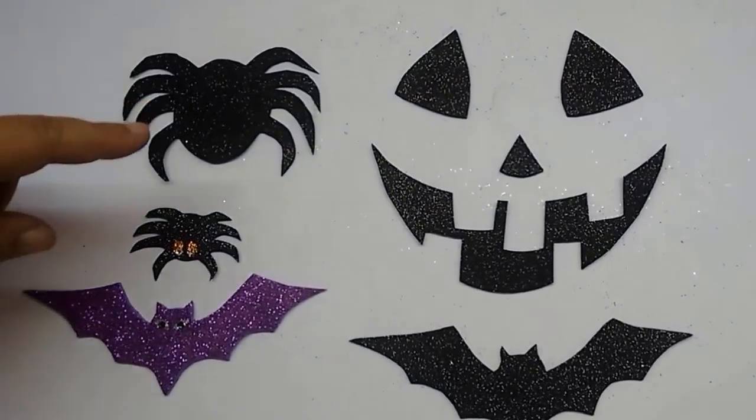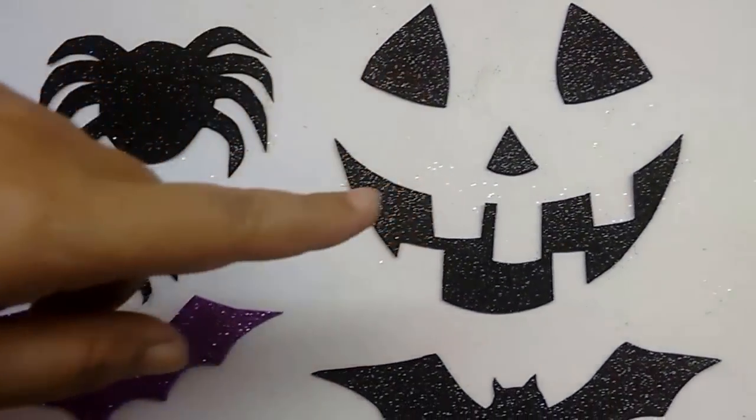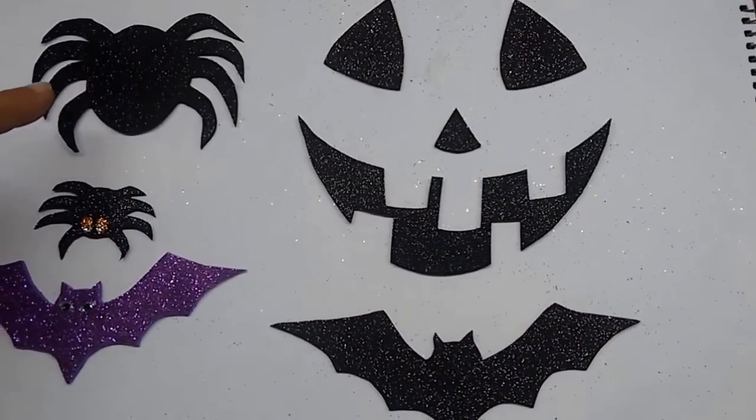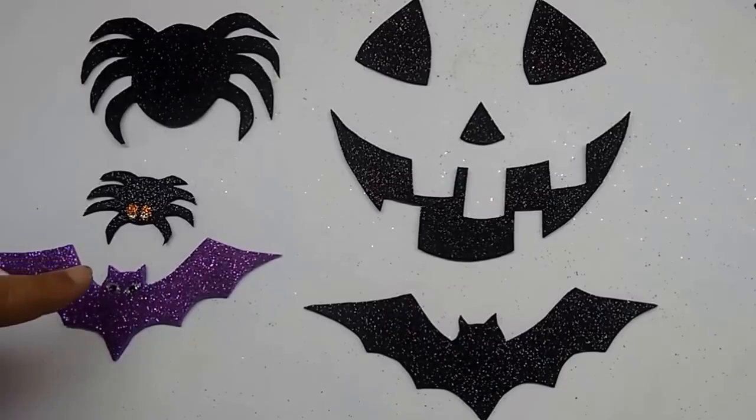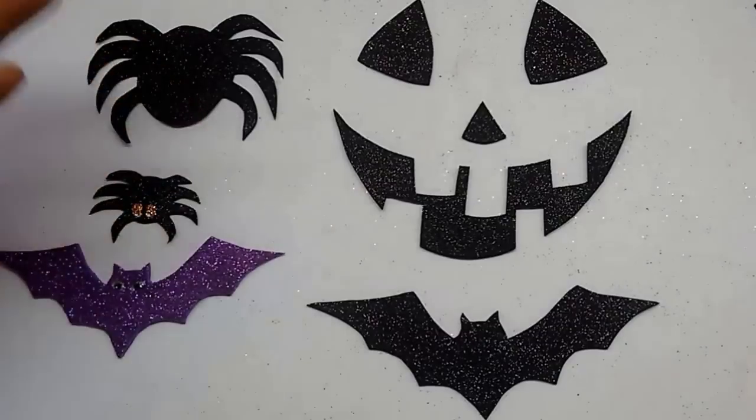Make stencils of spiders, bats, and Jack O'Lantern face, and then cut them out on the black glitter foam sheets and the purple glitter foam sheets. Make them in different sizes and any number that you want.